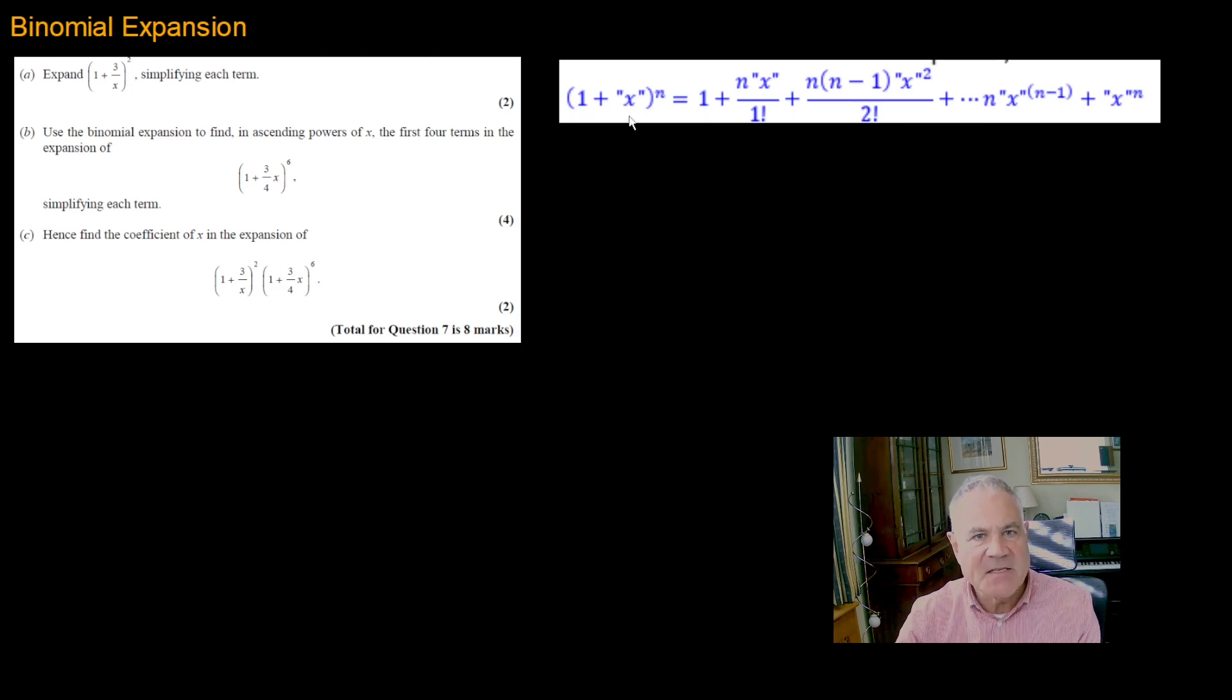I always put x in inverted commas because this 3 over x is our x in this expression, and 3 over 4x will be our x in this, so that's what we substitute. I think that's where students get confused, but let's have a go at this one and see how you get on.